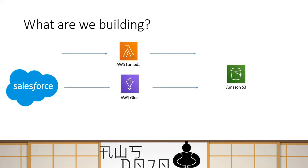Another option is AWS Glue, which can call APIs — you can use it to call the Salesforce API and move data to S3 using a language like Python or PySpark. But again, you have to write code in that situation. The solution we are going to see today uses AppFlow, where we can move data from Salesforce to S3 using configuration to get the job done.